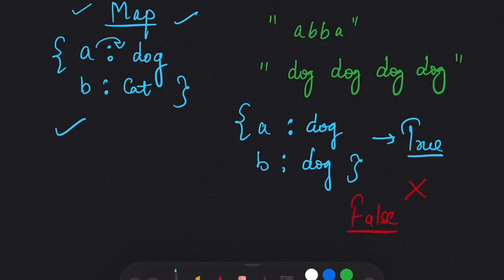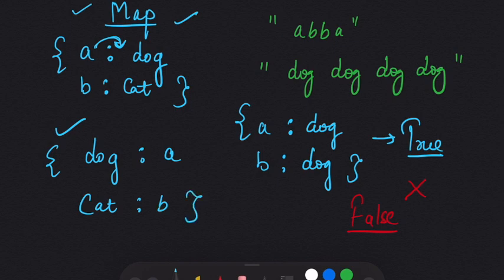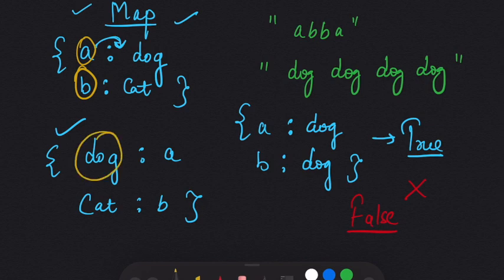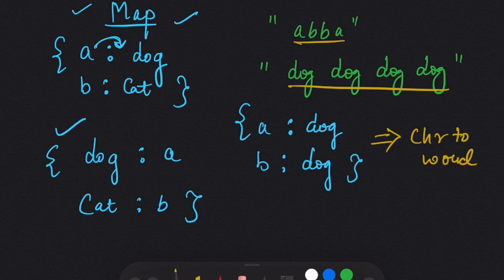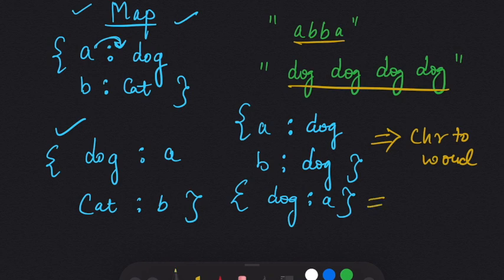To solve this issue, instead of one map we are going to have two maps: one for each character corresponding to a word, and one for each word corresponding to a character. The second map would be like 'dog' corresponds to 'a' and 'cat' corresponds to 'b'. This way, if a character is not in the character-to-word mapping, we can additionally check whether the word is also in the word-to-character mapping.